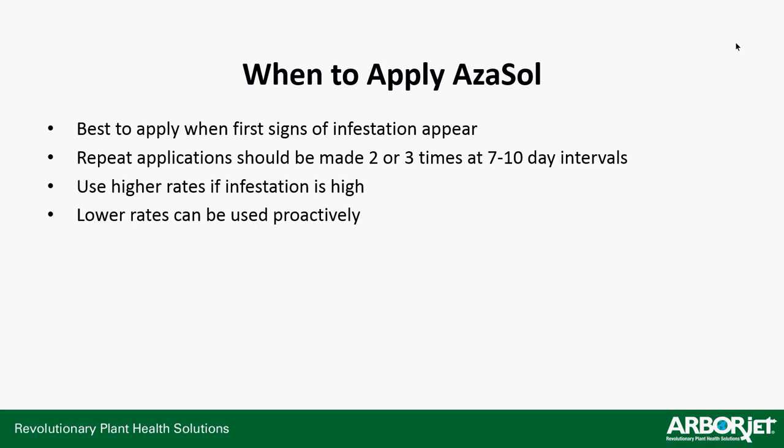When to apply Azazol: best to apply when the first signs of infestation appear. Make repeat applications two or three times at seven-to-ten-day intervals depending on how heavy your infestation is. Start with the high rate if you have a heavy infestation, and as your repeat applications come in you can drop down to the medium rate. If you're applying proactively, stick with the lower rate — as you go out with your first, second, and third applications, you'll build up a bit of the product in that plant.